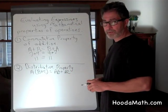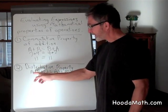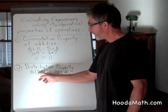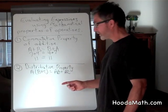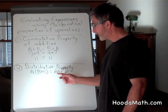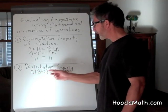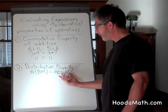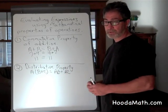The distributive property states that the product of a number and the sum of two other numbers equals the same thing as if you multiply the first number times the second number and multiply the first number times the third number and found the sum of those two products. Let's try.